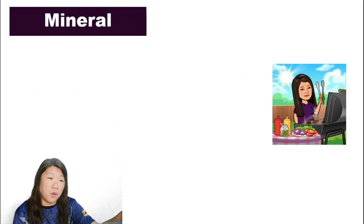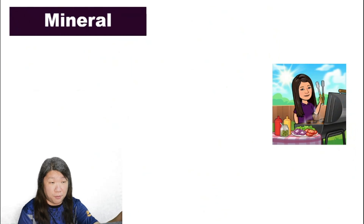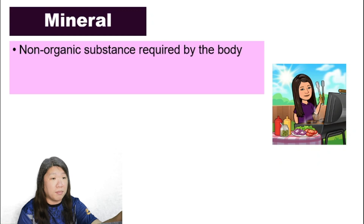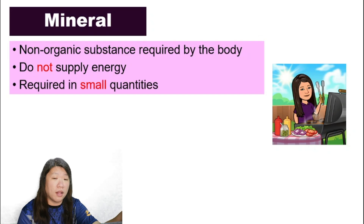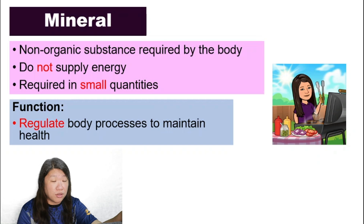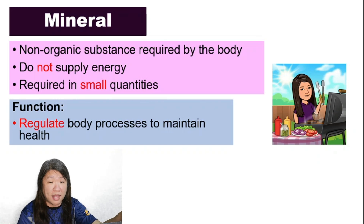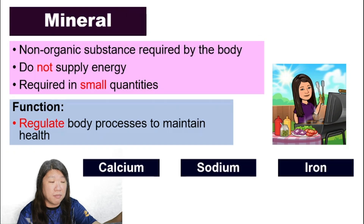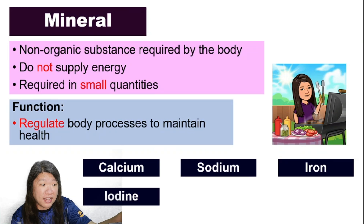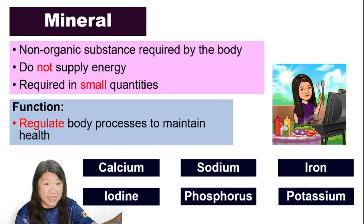Minerals, just like vitamins, come in many different types. Generally, minerals are non-organic substances required by the body. They do not supply energy and are required in small quantities. Their general function is to regulate body processes to maintain health. Types of minerals include calcium, sodium, iron, iodine, phosphorus, and potassium.